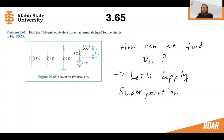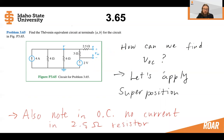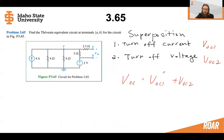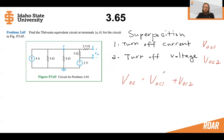Let's use the superposition method to find the open circuit voltage. We'll first turn off the current source and find the first open circuit voltage V_OC1, then turn off the voltage source and find V_OC2, and add them together to get the total open circuit voltage using superposition. We're taking two linear circuits and combining their effects to get that overall open circuit voltage.